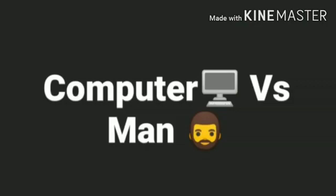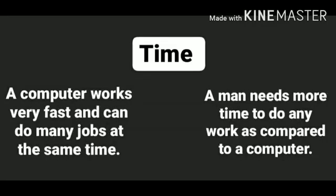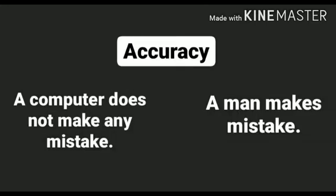Computer versus man. Storage: a computer stores a large amount of information and never forgets, whereas a man may forget the information stored in his mind. Time: a computer works very fast and can do many jobs at the same time, while a man needs more time to do any work as compared to a computer.